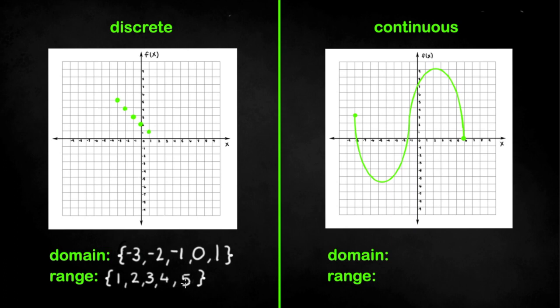For the continuous graph we are going to use inequalities. For domain the leftmost x value is negative 8 and the greatest is 6. This time we have to make sure that we use the variable x because this is what represents domain. So the inequality would be negative 8 is less than or equal to x which is less than or equal to 6.